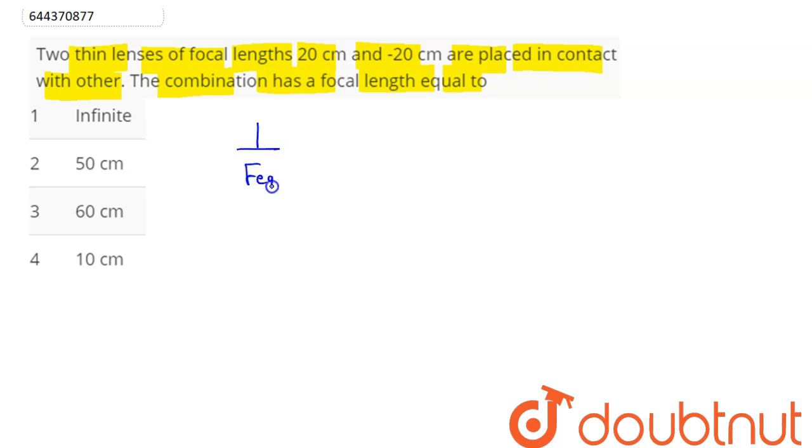The equivalent focal length formula for two lenses placed in contact with each other is given as 1/F_eq = 1/f1 + 1/f2. Here, f1 is plus 20 centimeter and f2 is minus 20 centimeter. So this comes as 0. Hence, the equivalent focal length is 1/0, which equals infinite.